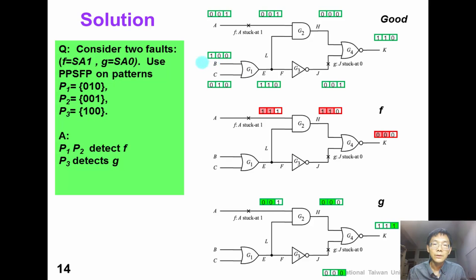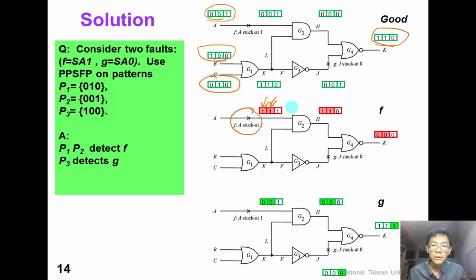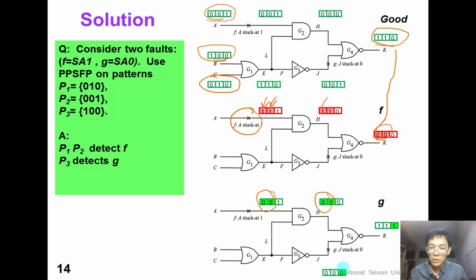Now have you got the answers? We apply three patterns together. The good outputs are 1-1-0. Then we create an event to inject stuck-at-1 fault F. This event is propagated all the way to the output. We compare this with the good output and we get output 1-1-1. Comparing with the good output, we know that pattern 3 detects fault G.